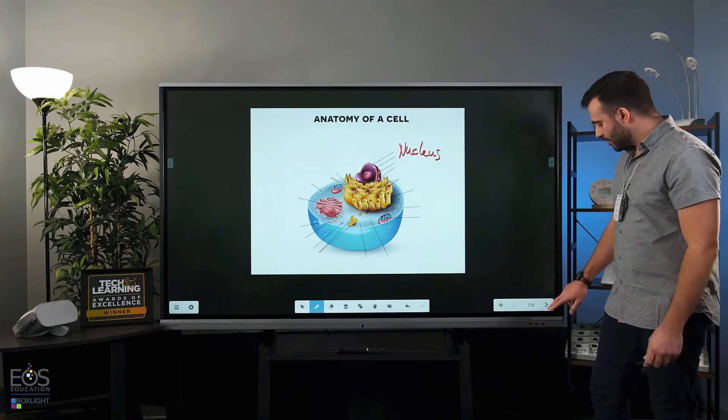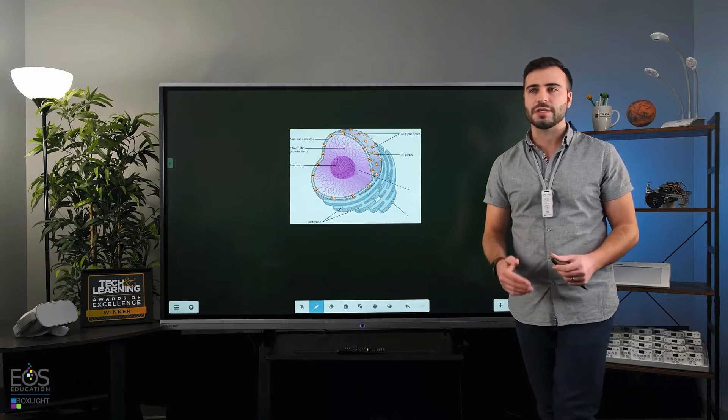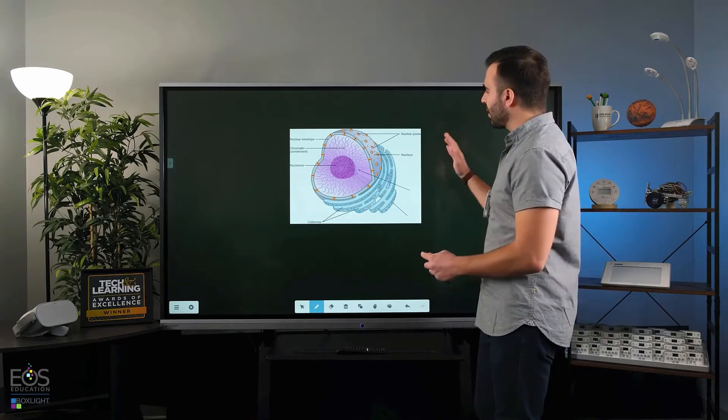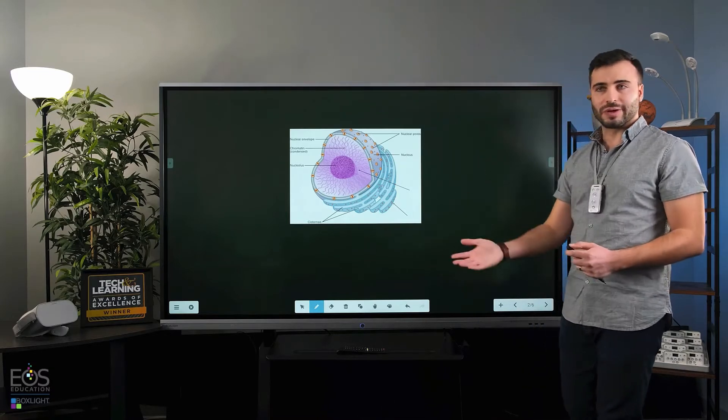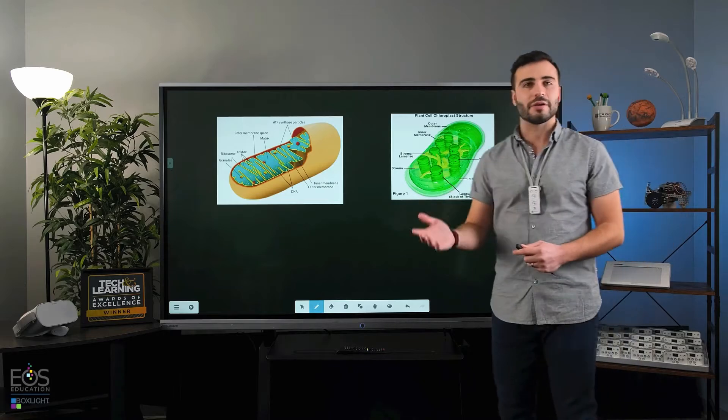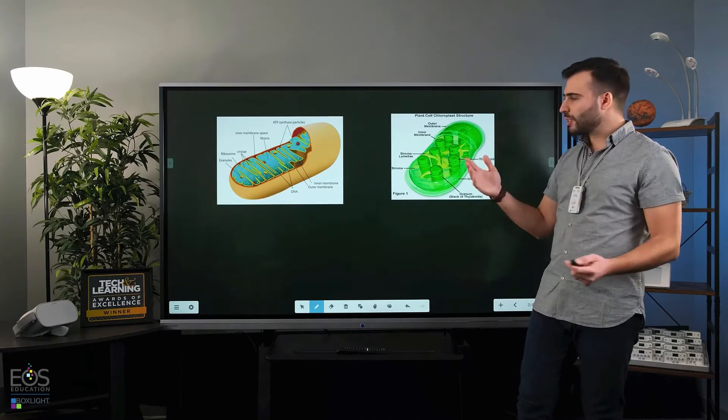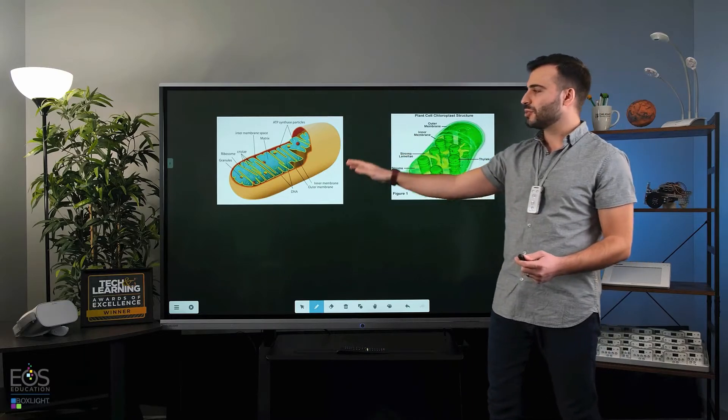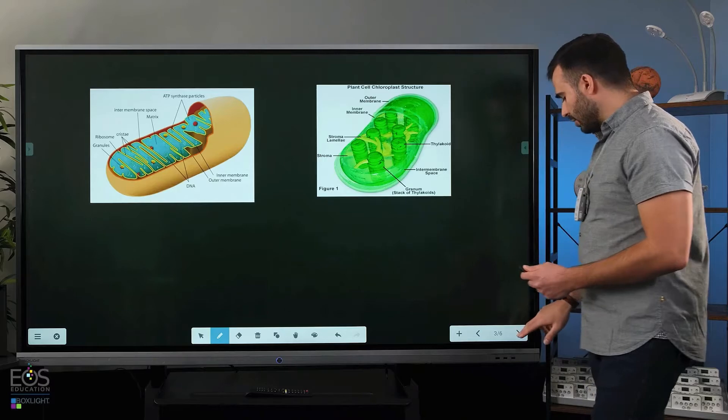You can use the pages feature here to load up different images in advance so you can talk about different things and scroll between them without having to re-import things every time. You can go organelle by organelle, or what I like to do is more of a comparative study where you can bring students up or ask questions and have them point out differences between things like mitochondria and chloroplasts.